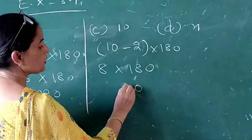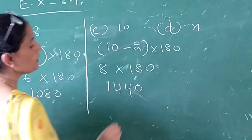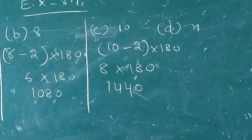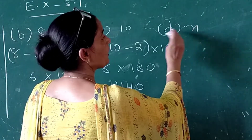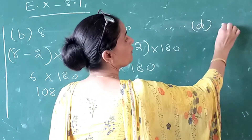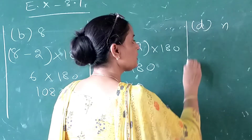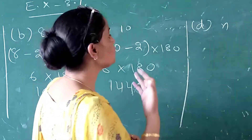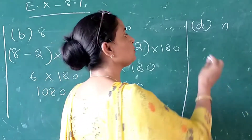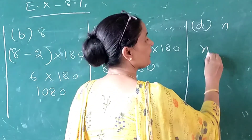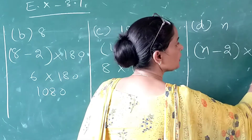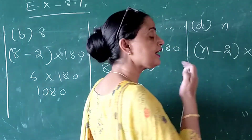So we can do the same thing when we have to write, we can write the second one, and then we can write the next one, and the formula is n minus 2. This is the formula.